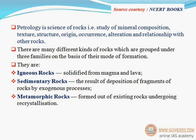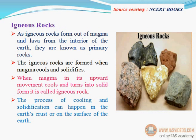There are many different kinds of rocks grouped under three families on the basis of their mode of formation: igneous rocks (solidified from magma and lava), sedimentary rocks (the result of deposition of fragments of rocks by exogenous processes), and metamorphic rocks (formed out of existing rocks undergoing recrystallization).